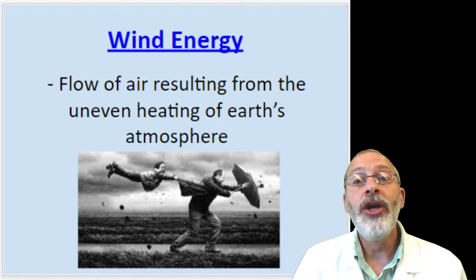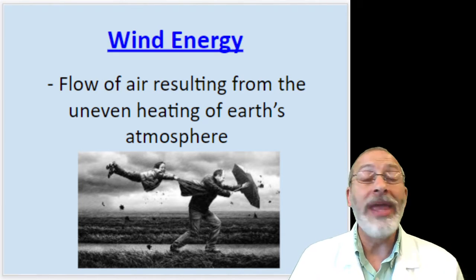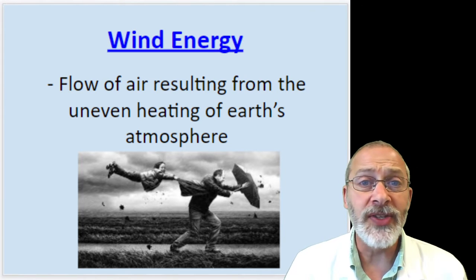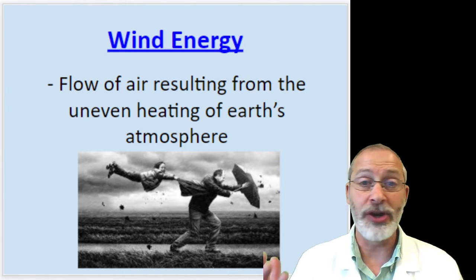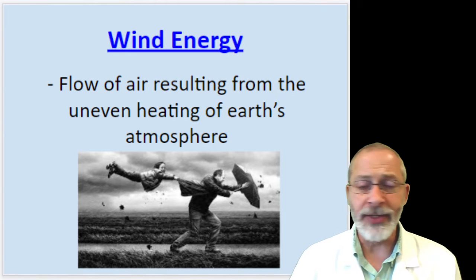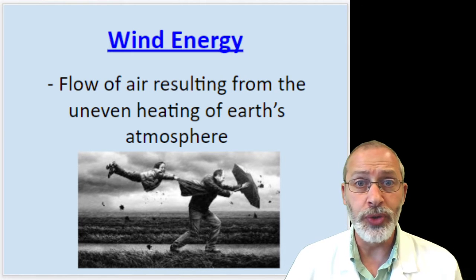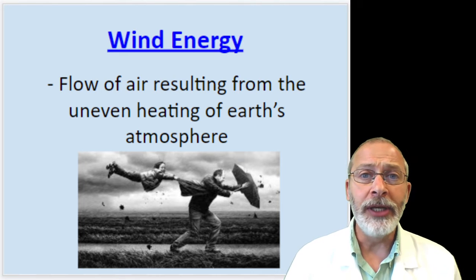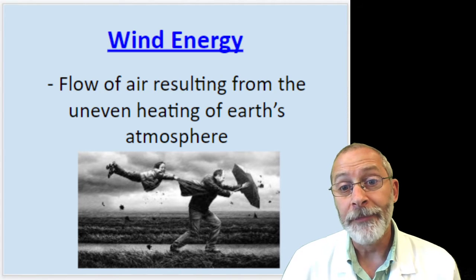Wind is the flow of air resulting from the uneven heating of the earth's atmosphere. Wind exists everywhere on planet earth — sometimes stronger, sometimes calmer. But as long as the sun is shining and the earth is a sphere, there's going to be uneven heating of the atmosphere and it will ultimately result in wind. There will always be wind, and sometimes the strongest winds are associated with the strongest storms related to cold fronts.